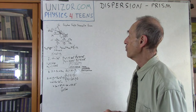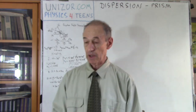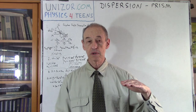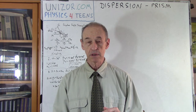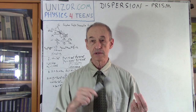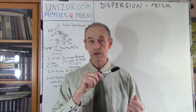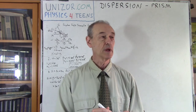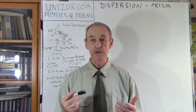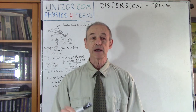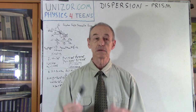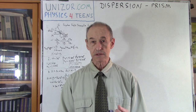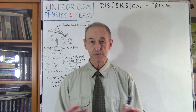Let's go back to our dispersion topic. In the previous lecture about dispersion, we talked about dispersion against a flat surface — flat glass. We explained how different colors, having different wavelengths, travel through the border between air and glass and are dispersed. There is angular dispersion because different wavelengths have different speeds of propagation in substances. In all substances except absolute vacuum, different wavelengths of light have different speeds. Only in vacuum are all speeds the same.